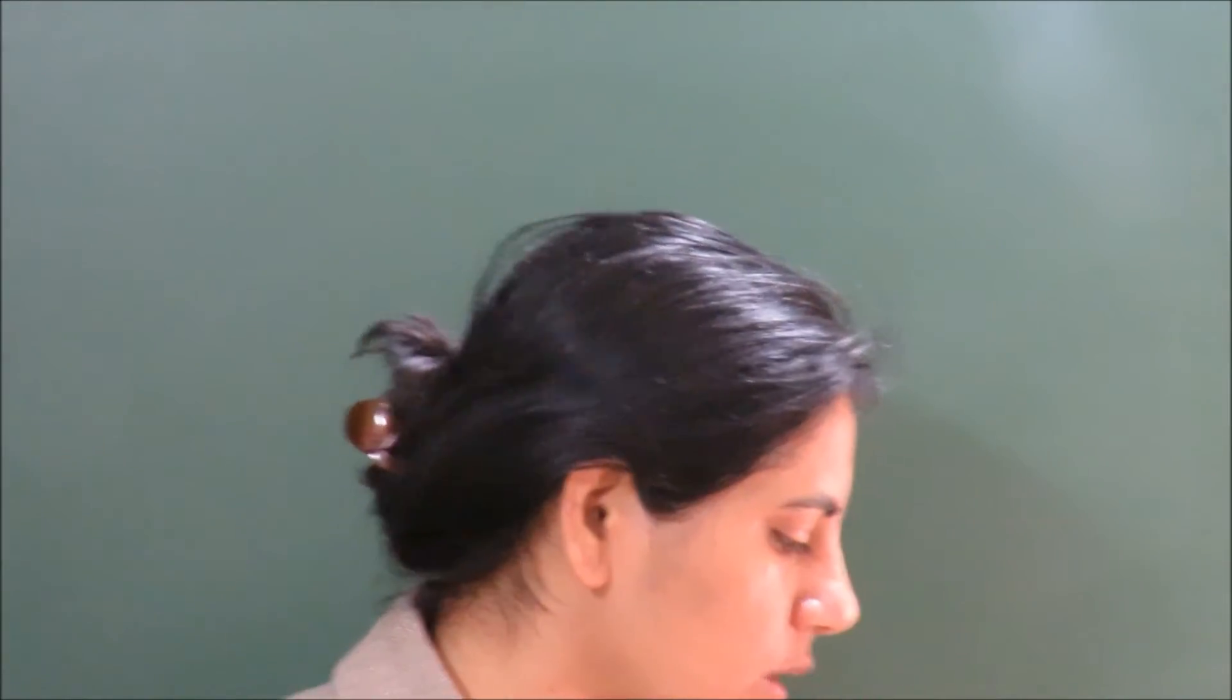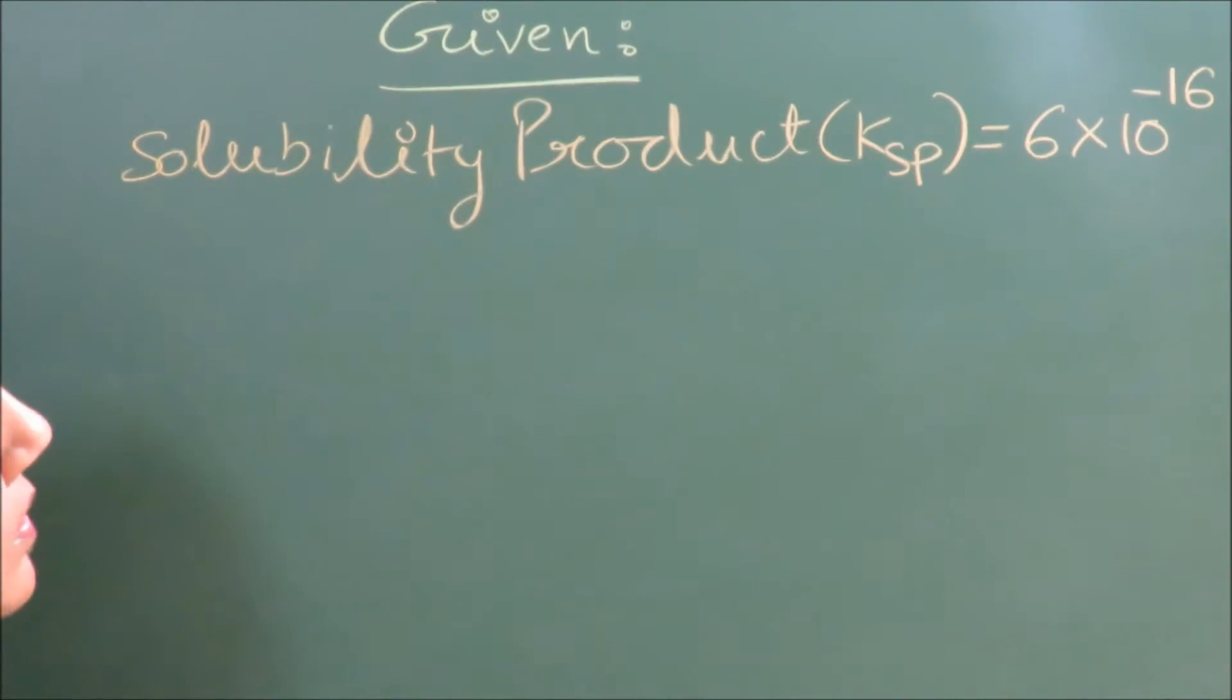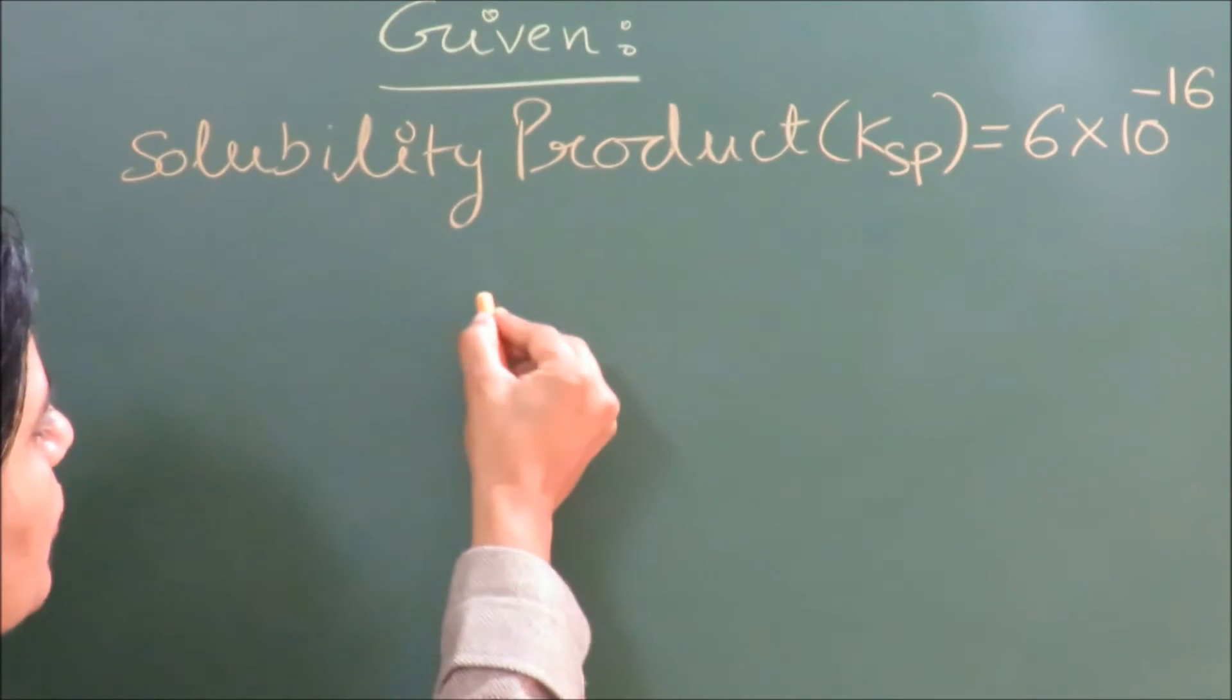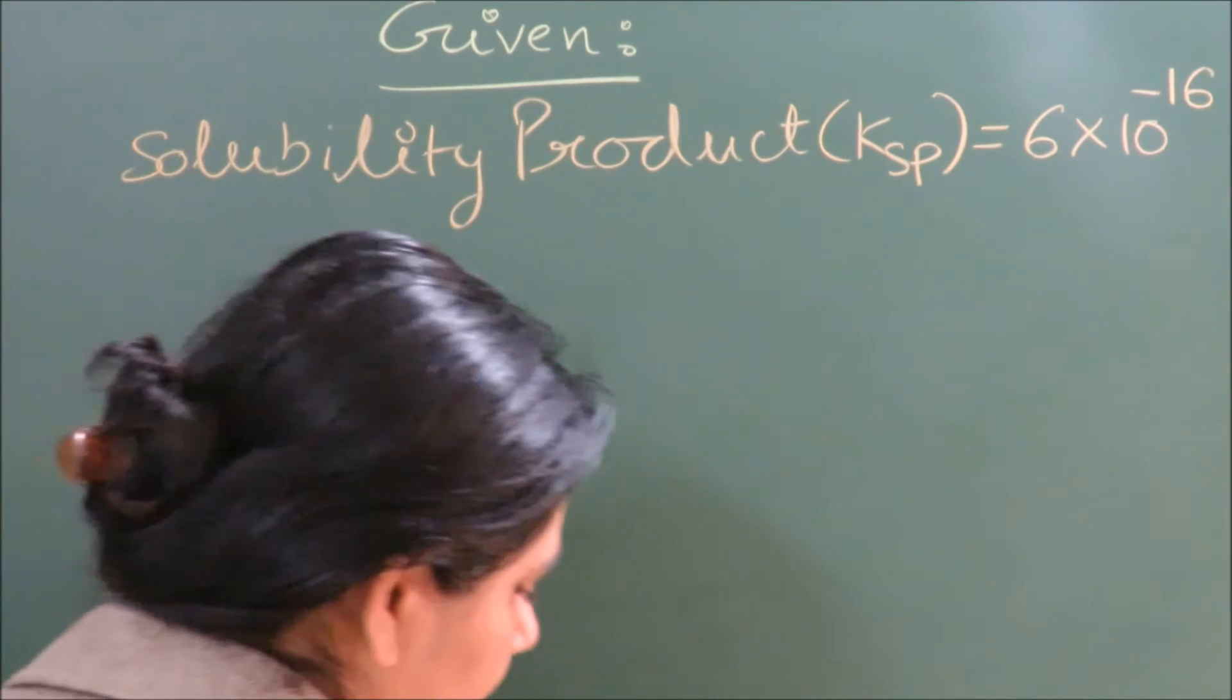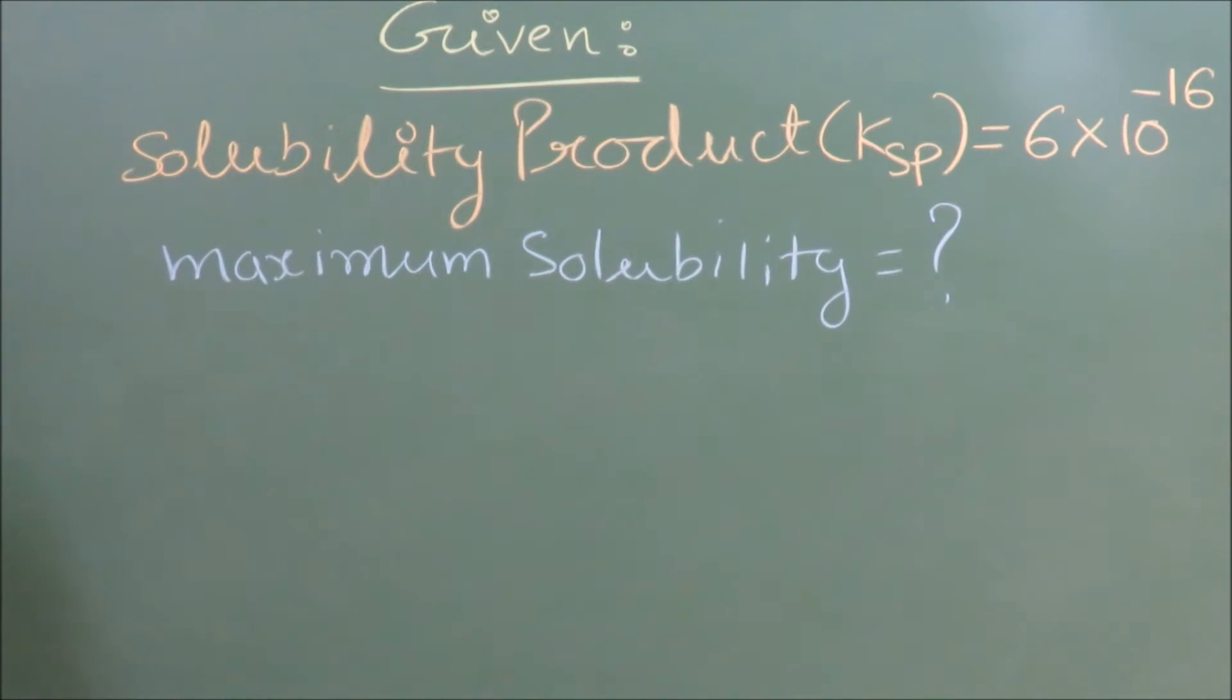Firstly, we are writing what is given to us: solubility product Ksp = 6×10^-16 of CuS. Our aim is to find out the maximum solubility.